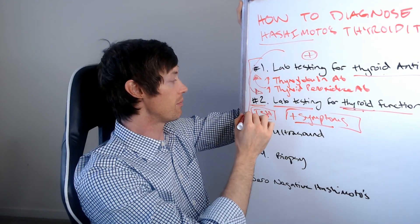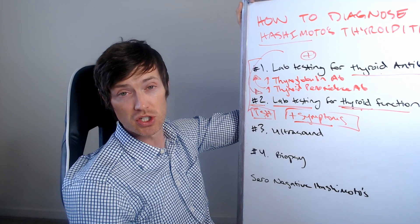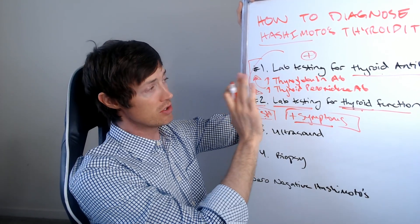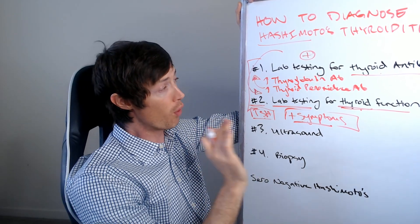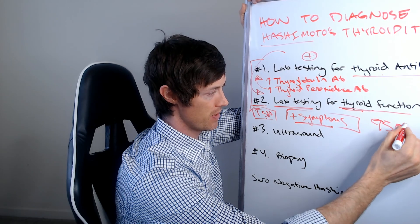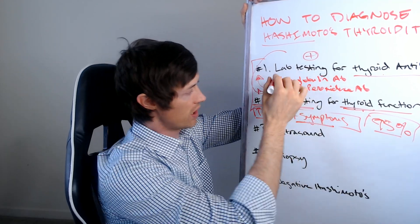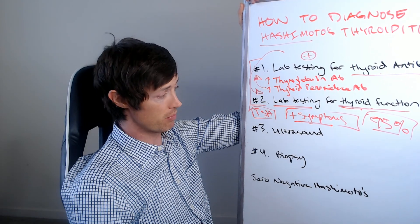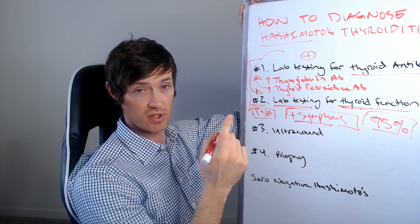And between number one and number two, most patients should be able to know that they do indeed have Hashimoto's thyroiditis. So I really am only looking at numbers one and number two for most people, 95% plus of people. These number one and two are sufficient for that diagnosis, but there are some people who still need additional tests. So let's talk about that next.